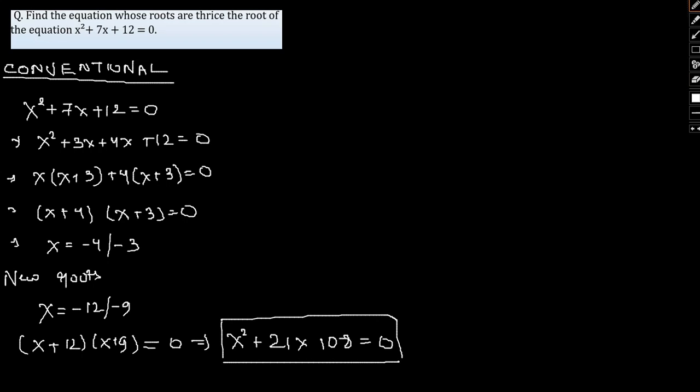Now let me show you how to go about and solve this using a shortcut method. Our equation is given as x² + 7x + 12 = 0.